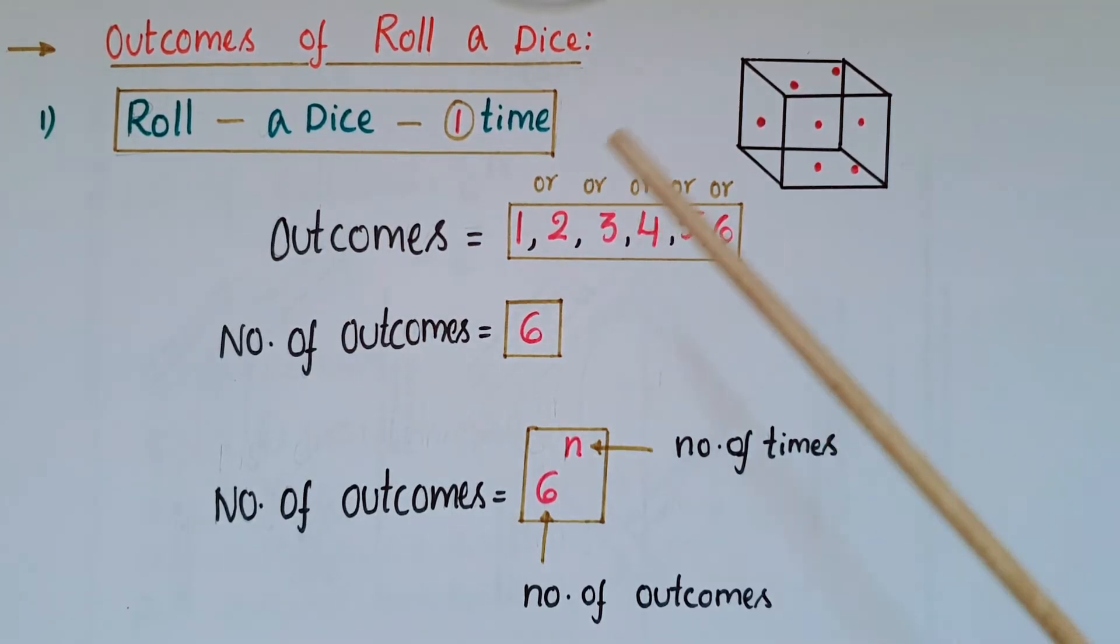So the first one is roll a dice one time. We know that the outcomes for roll a dice one time are 1, 2, 3, 4, 5, and 6. So number of outcomes here are 6.